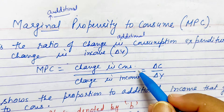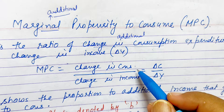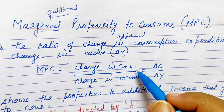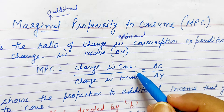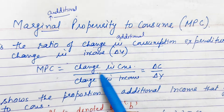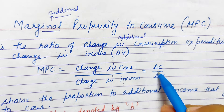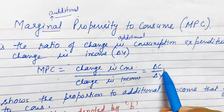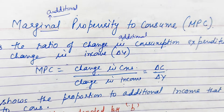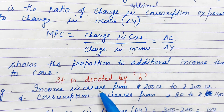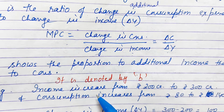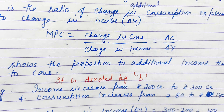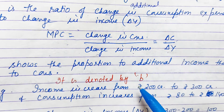How much the income of the economy increased — say it was 100 crore, then 200 crore, then 250 crore, so the increase is 150. Out of that 150, how much did consumption increase? That is the increase in consumption. The formula is: change in consumption divided by change in income. Change in consumption is denoted by delta C, upon delta Y. This tells us how much of the additional income goes for consumption expenditure and at what rate the economy's people are spending on consumption.